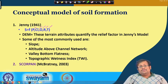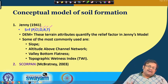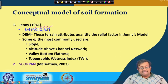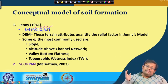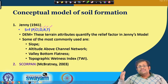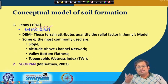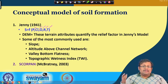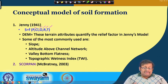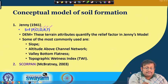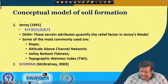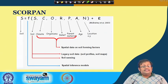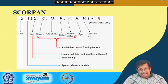Remember that according to Jenny, soil can be defined as a function of these five different factors. This is the base model from which the new SCORPAN model concept has evolved. The SCORPAN model concept was given by renowned soil scientist Alex McBratney of the University of Sydney in the year 2003. The SCORPAN model says that soil is basically a function of SCORPAN plus some errors.